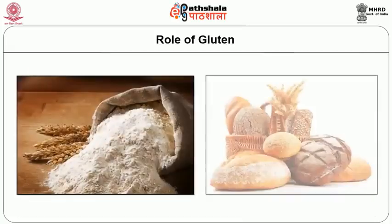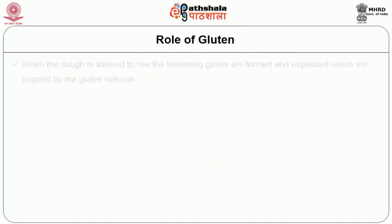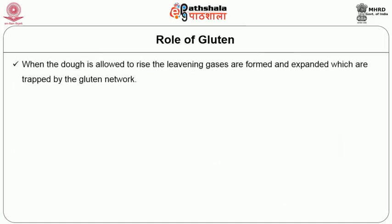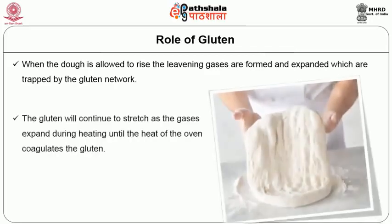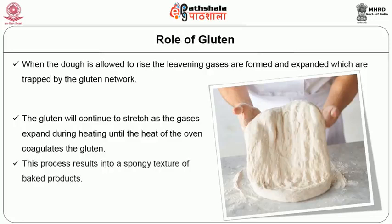Wheat flour where there is a 1 to 1 ratio of glutenin and gliadin has the most important role in bakery products. When the dough is allowed to rise, leavening gases are formed and expanded, which are trapped by the gluten network. The gluten continues to stretch as the gases expand during heating, until the heat of the oven coagulates the gluten. This process results in a spongy texture of the baked products.